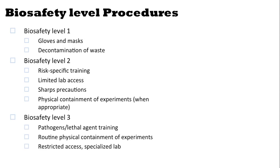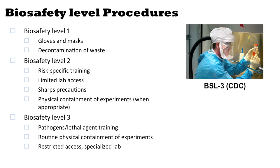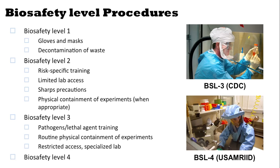Biosafety level 3 adds training for pathogens and lethal agents, routinely has physical containment of experiments, and has a restricted-access specialized lab — an example of this would be this CDC facility. Biosafety level 4 is much rarer. An example is given here of a U.S. Army medical research facility. There are a small number of these across the world, and the training is much more intense, along with limitations on how the facility and the lab can function.